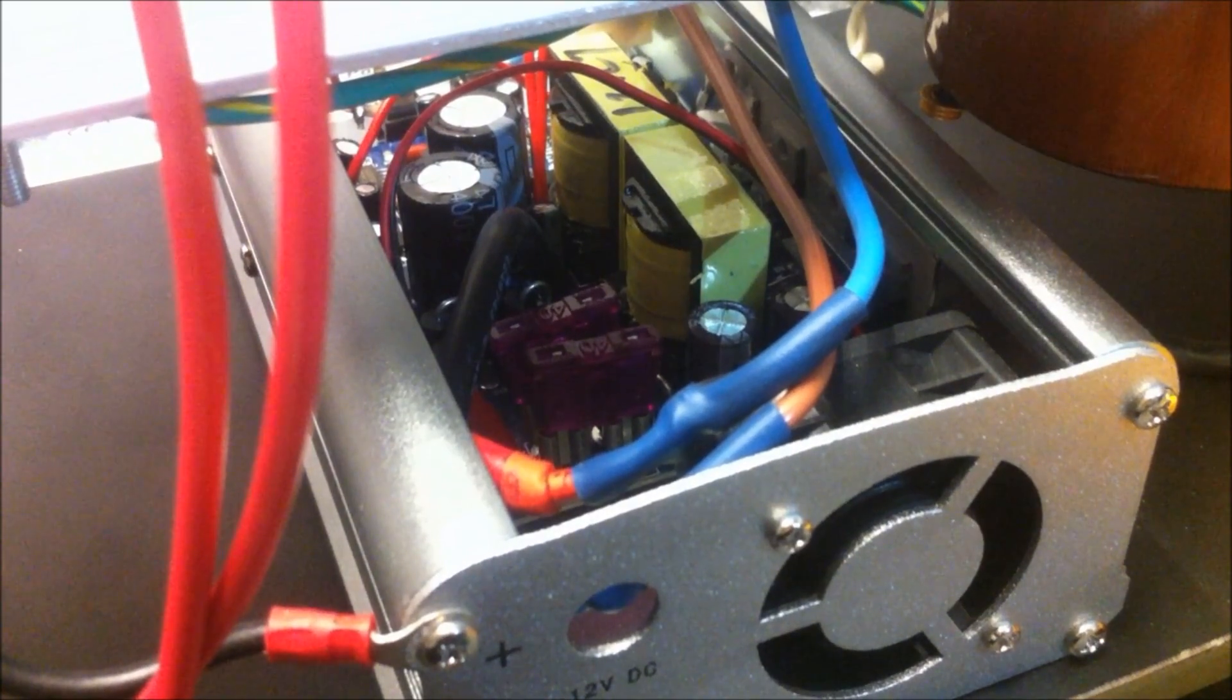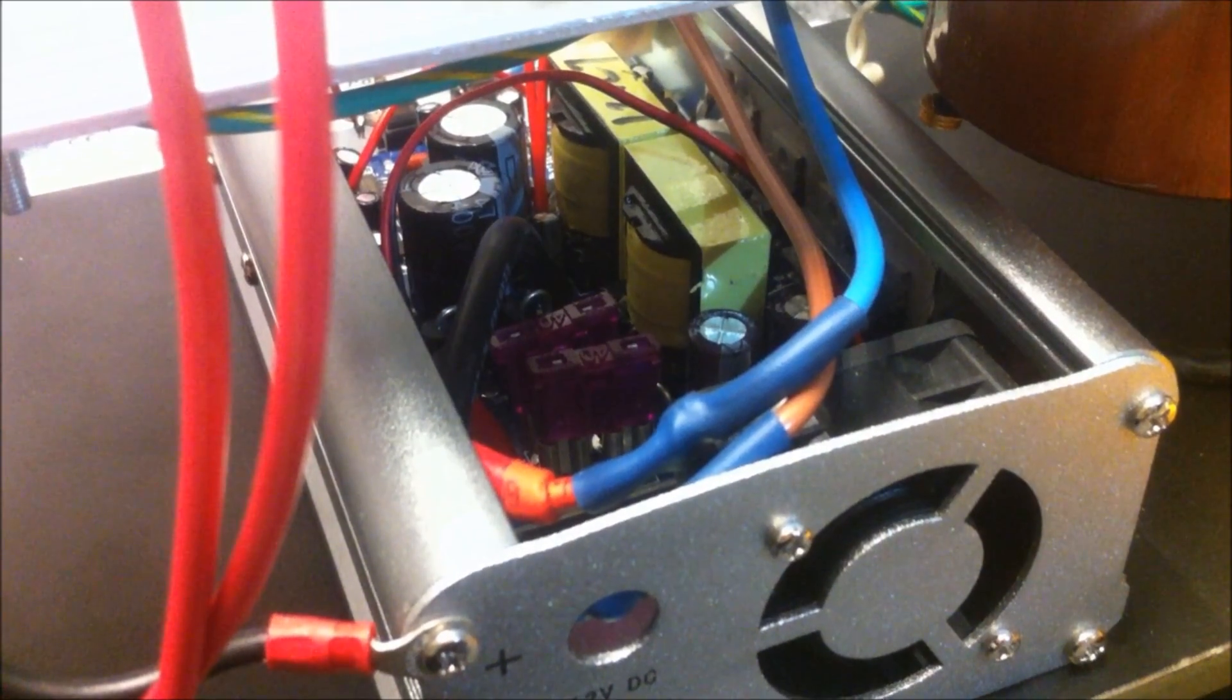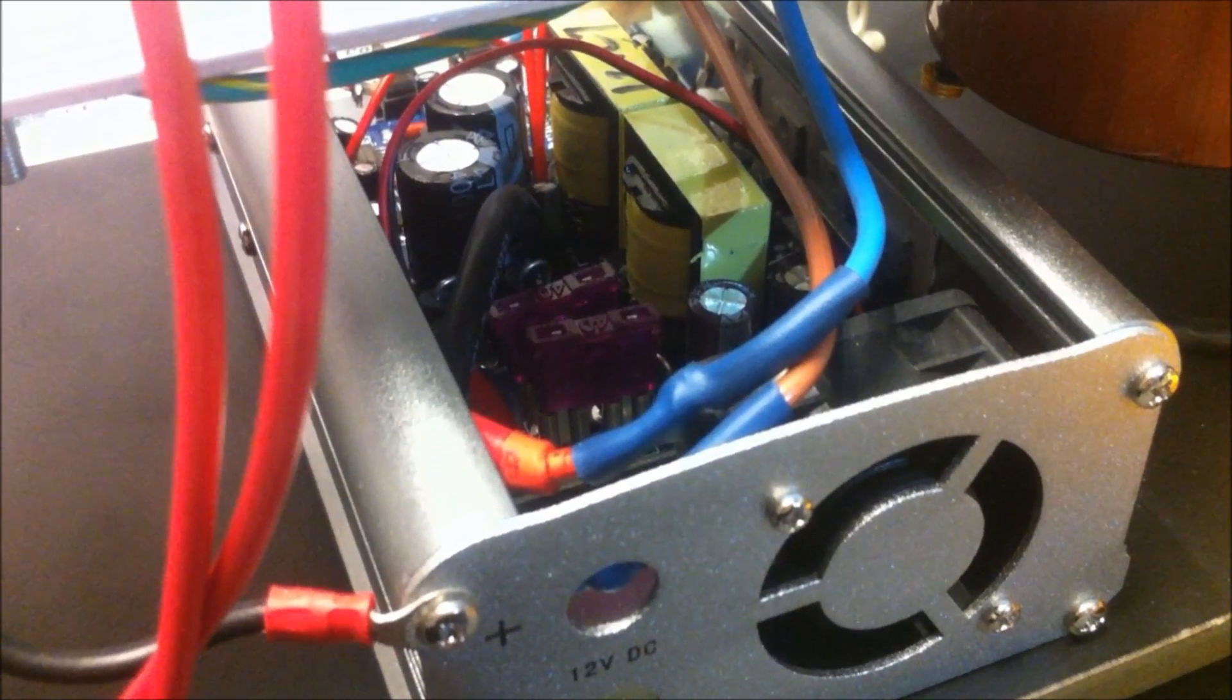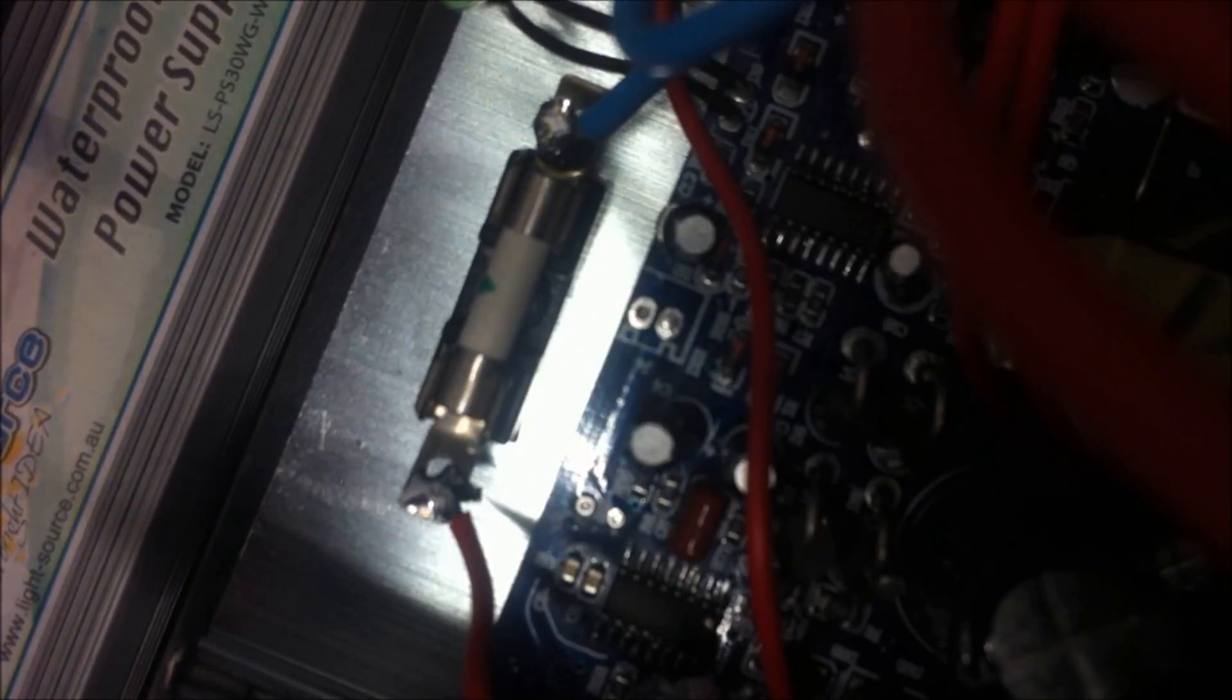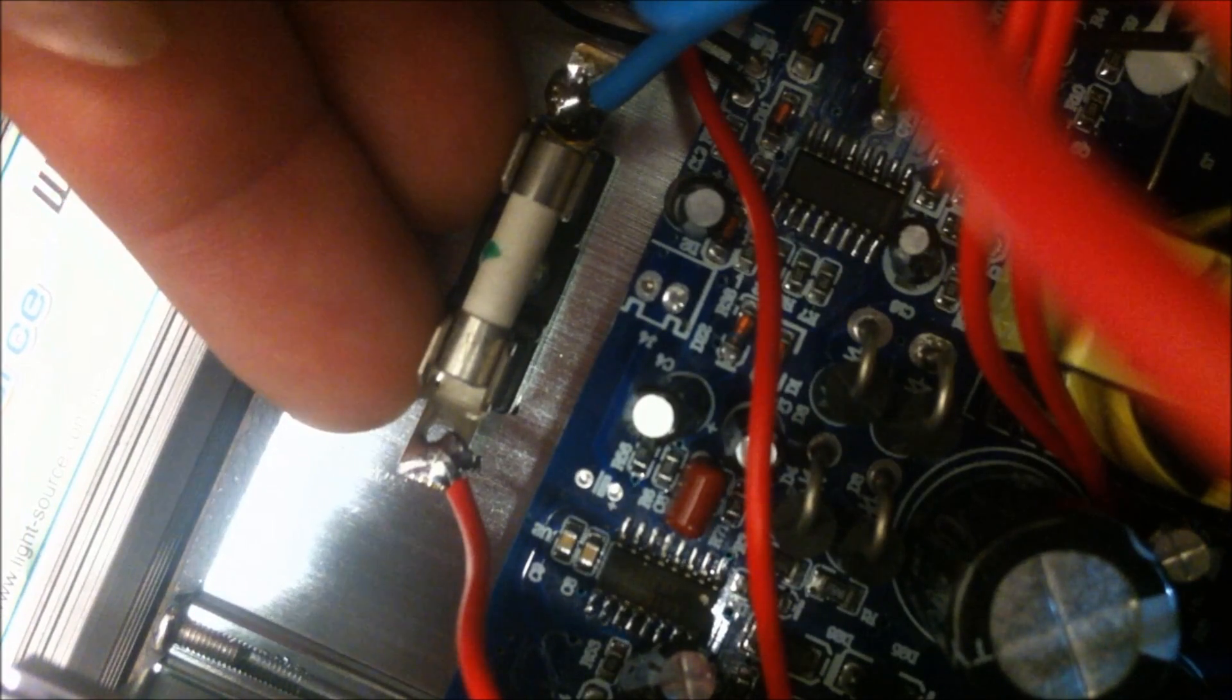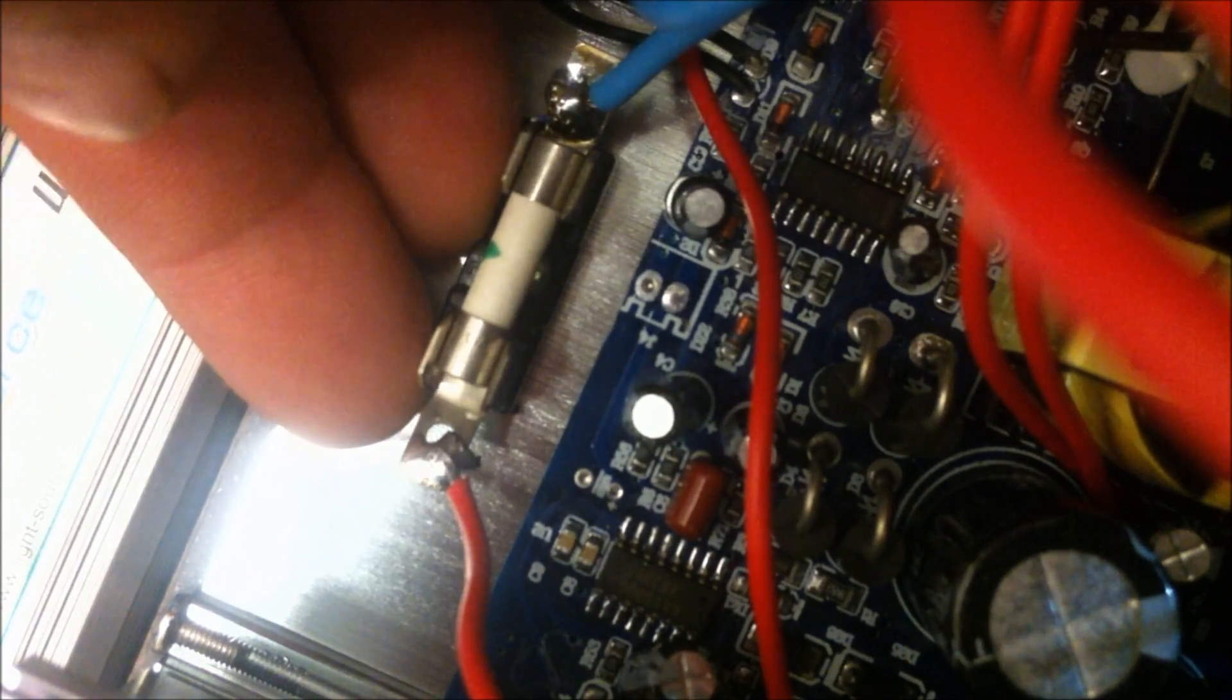This is the inverter that the PWM feeds into which is a standard cheapo modified sine wave inverter which gives an output of approximately 200-250 watts at the most. At the back of that unit, you can see here that I have actually fused the output so that just like on the DC side, on the AC side, we can just keep dropping the fuse down until we know what the maximum output draw is on this system.